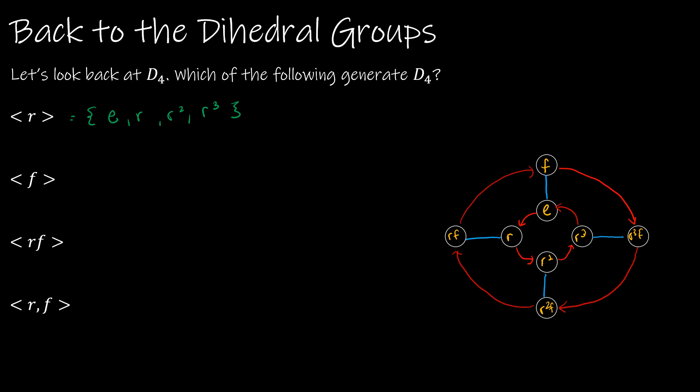What about F? Well, F would just be not flipping at all, which is the identity, and then flipping. And then if I flip twice, what happens? Well, I go from E to F on a flip, and then I would go back to E again. So that is a subgroup, but it doesn't generate the entire set of D4. So far, we don't have any generators of D4.